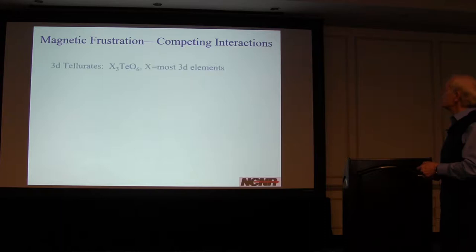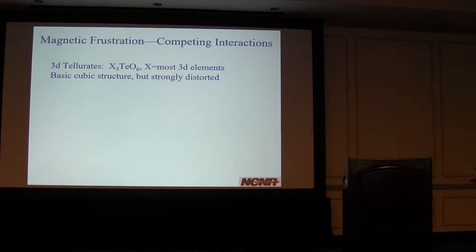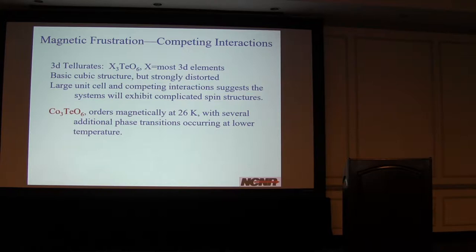Let's get right into it. This material has a number of different competing interactions. There are many 3D tellurites, all insulators, and you can put just about all the 3D elements in there. I always like to pretend the structures are cubic, but it really isn't—it's not as strongly distorted and has a large unit cell. For example, the cobalt-oxygen bonds can vary by 50% in length, so you can have quite different competing interactions.